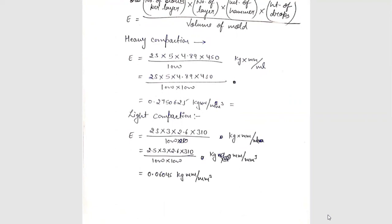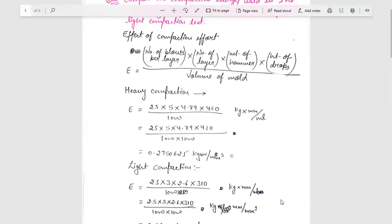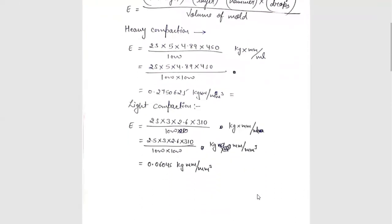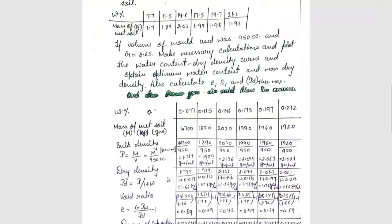E equals to 25 into 3 into 2.6 into 310 upon 1000. In this light compaction test, the number of blow per layer is 25, number of layer is 3, weight of hammer is 2.6 and the height of drop is 310 and the volume of mold is same as 1000. Then again equate it and the value of compactive energy will be 0.06045 kg mm per mm cube.